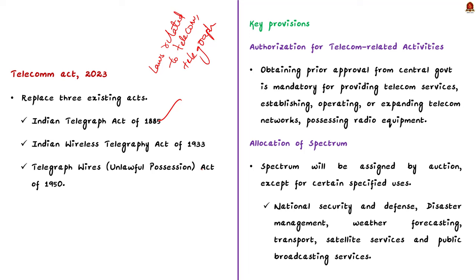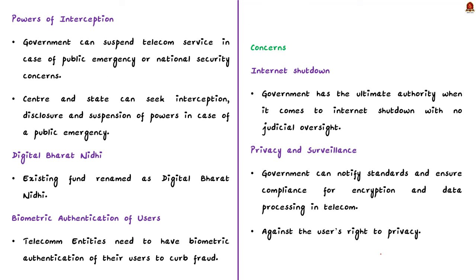Key provisions of the bill: Firstly, regarding authorization for telecom-related activities — obtaining prior approval from the central government is mandatory for providing telecom services, establishing, operating, or expanding telecom networks, and possessing radio equipment. The bill also allows the government to take back unutilized spectrum. Secondly, regarding spectrum allocation — spectrum will be assigned by auction except for specific use cases such as national security and defense, disaster management, weather forecasting, transport, satellite services like DTH and satellite telephony, and BSNL, MTNL, and public broadcasting services.